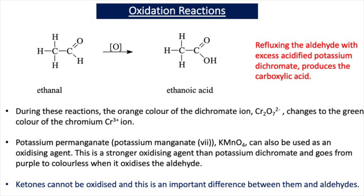To oxidize an aldehyde to a carboxylic acid, you reflux the aldehyde with excess acidified potassium dichromate solution, which is acidified with dilute sulfuric acid. An example is ethanal, an aldehyde, being oxidized to the carboxylic acid ethanoic acid. In this equation the oxidizing agent is represented with an O in square brackets. When acidified potassium dichromate oxidizes any substance it changes from orange to green, because the dichromate ion, Cr2O7²⁻, is reduced to the chromium ion, Cr³⁺.